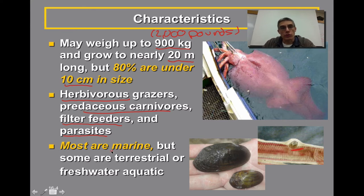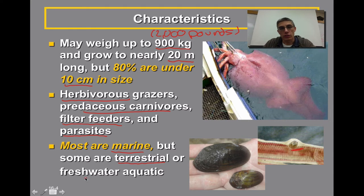Most of these animals are considered marine. There are definitely a few terrestrial ones, like the slugs and snails we discussed, and there are even a few, like you see on the right, that are considered freshwater.